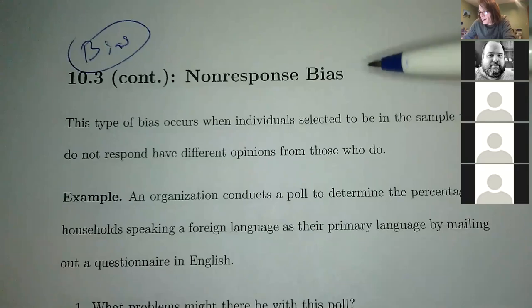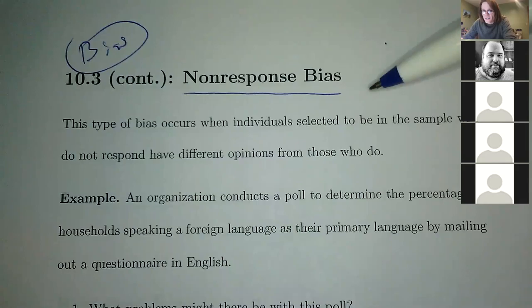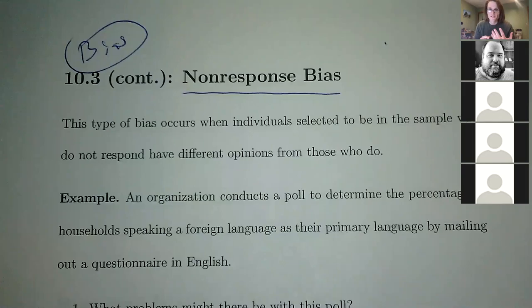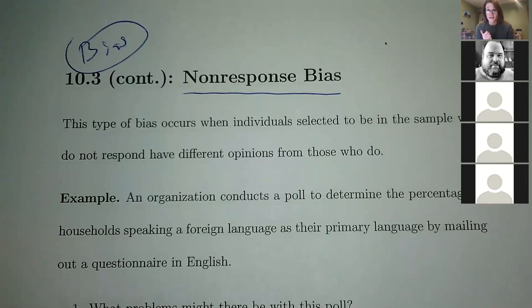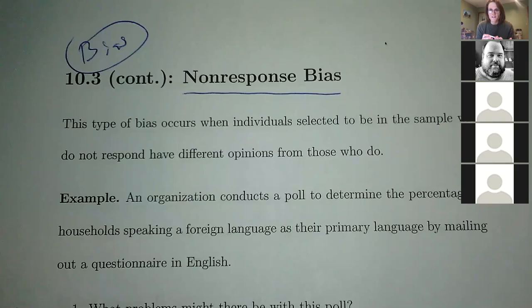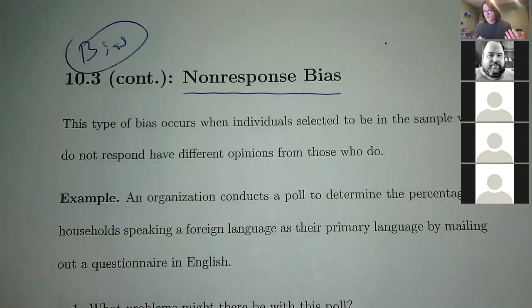We talked about sampling bias — that's when something is systematically wrong with your sample, the way you construct it or where you're choosing people from. But this COVID example is a different kind of bias. Non-response bias occurs when individuals selected to be in the sample who do respond have different opinions than the ones who don't respond. Like the political poll in 1936 with FDR and Alfred Landon — the people who responded were overwhelmingly supporters of Landon because they were more motivated to get the incumbent out.